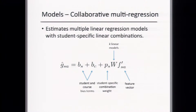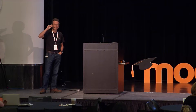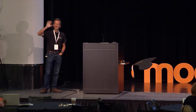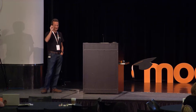What we developed is what we call a collaborative multi-regression model, which is a bit more complicated. Instead of having a single linear regression model that applies to all students, we postulate that there are a small number of linear regression models that can explain the different students. The specific regression model for each student is a linear combination of those models.